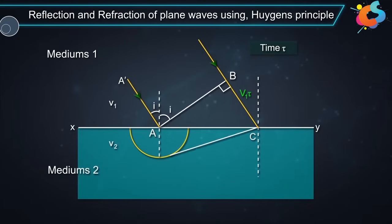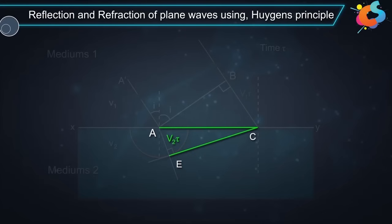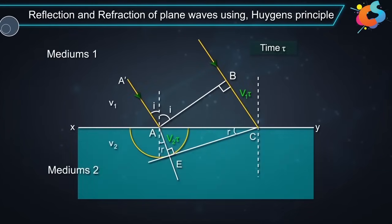Now draw a tangent plane from point C to the sphere. We will call this point E. This plane CE represents the refracted wave front and the angle ACE is equal to R, the angle of refraction.